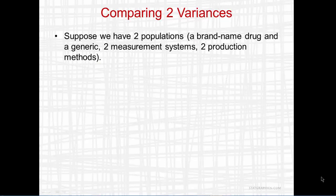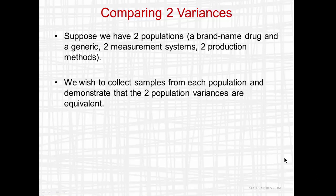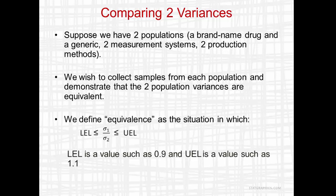Suppose we have two populations — perhaps a brand-name drug and a generic, two measurement systems, or two production methods. We wish to collect samples from each population and demonstrate that the two population variances are equivalent. We'll define equivalence as a situation in which the ratio of the standard deviations of the two populations falls between a lower equivalence limit, such as 0.9, and an upper equivalence limit, such as 1.1.